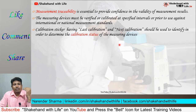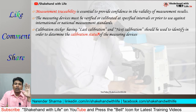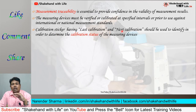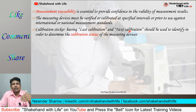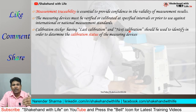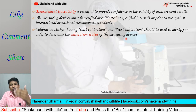For identification of calibration status, a calibration sticker showing the last calibration date and next calibration date should be put on the measuring devices, so that you can identify whether the instrument is calibrated or not, and if calibrated, on which date it was calibrated and on which date it is next due to be calibrated.